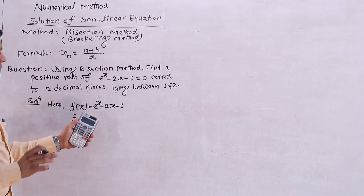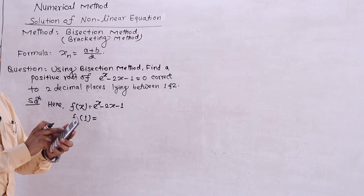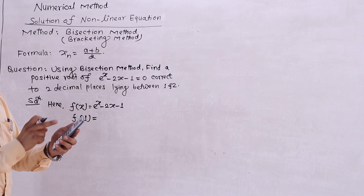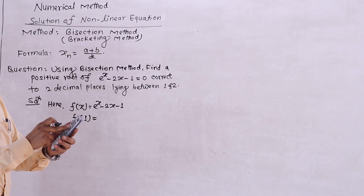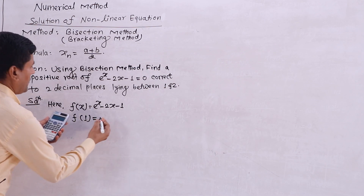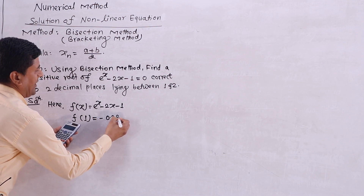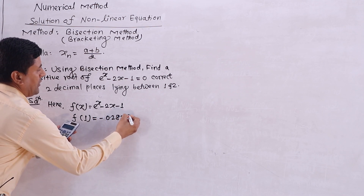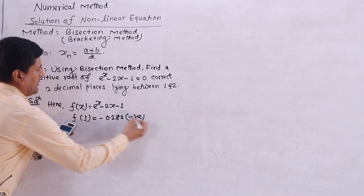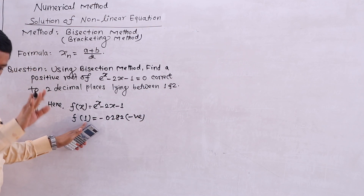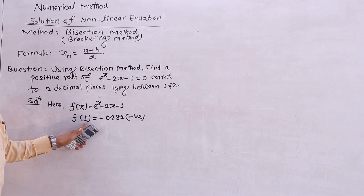I will use the x value of 1 and calculate. The result is minus 0.282, meaning this is negative. So f(1) is negative — the curve is below the x-axis at x = 1.